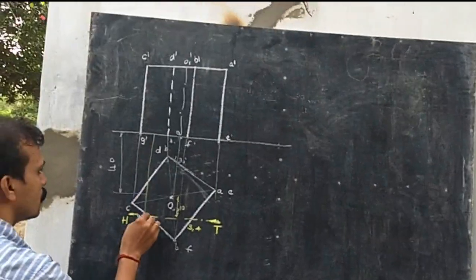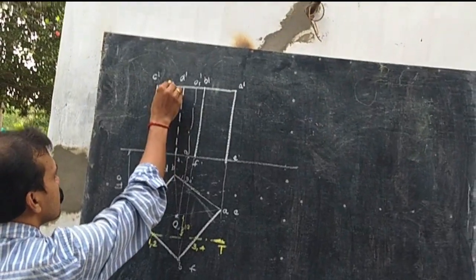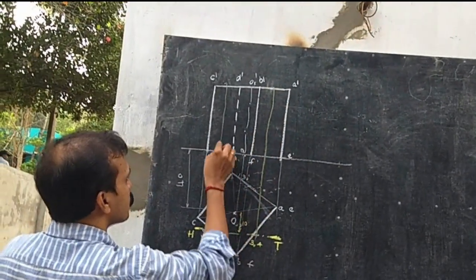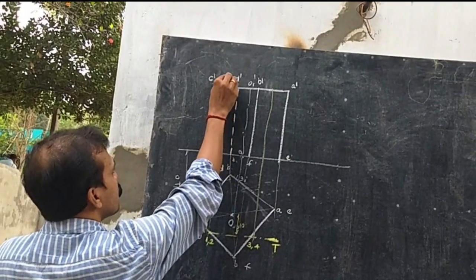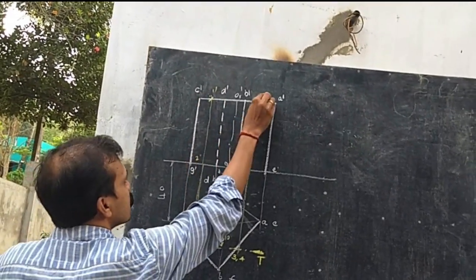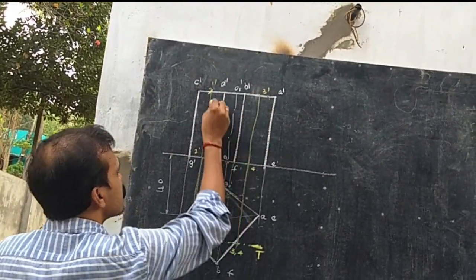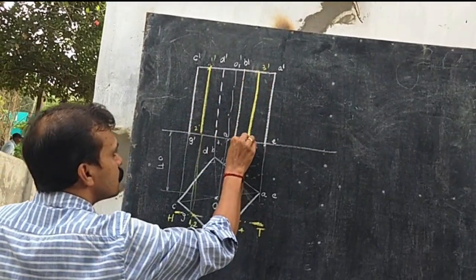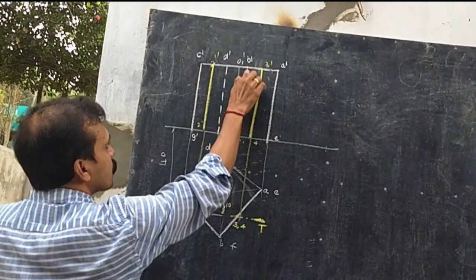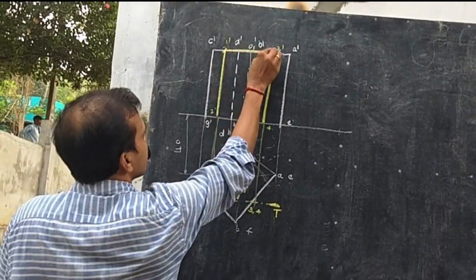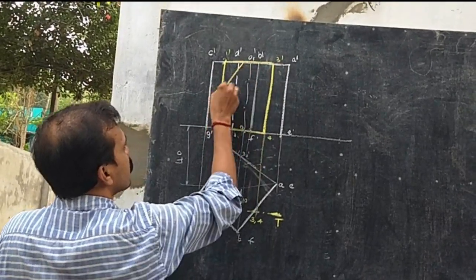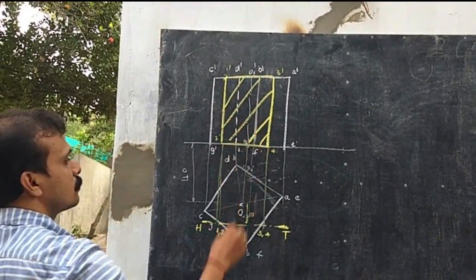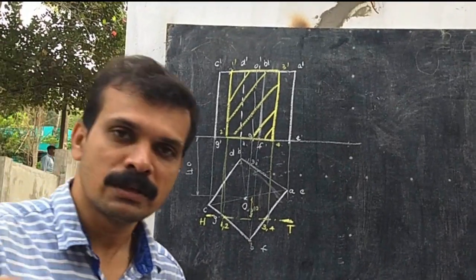Now project all these points up. Project like this so that this will be 1 dash, 2 dash, this will be 3 dash, and this 4 dash. Close this and remove this one, so this will be the corresponding section. I think all of you have understood.